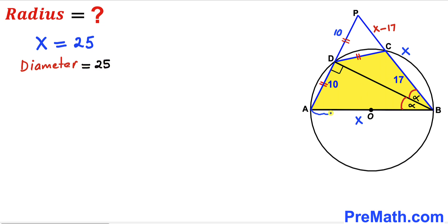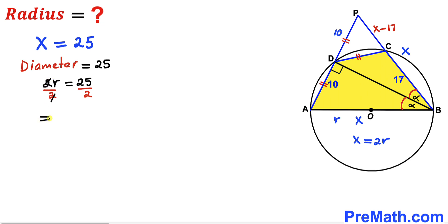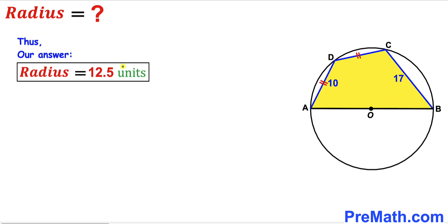Letting r denote the radius AO, the diameter X equals 2r. So 2r equals 25, and dividing both sides by 2 gives r equals 12.5 units. After all calculations, the radius of this circle is 12.5 units — that's our final answer.